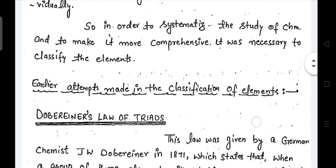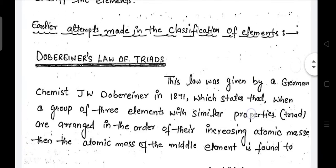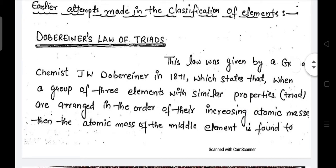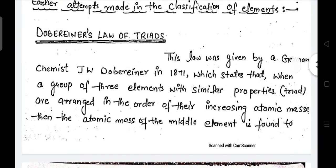Now we discuss the earlier attempts made in the classification of elements. First is Dobereiner's Law of Triads. Dobereiner was a German chemist. This law was given by a German chemist J.W. Dobereiner in 1871, which states that when a group of three elements with similar properties are arranged in order of their increasing atomic masses, then the atomic mass of the middle element is found to be arithmetic mean of the atomic mass of the other two elements.